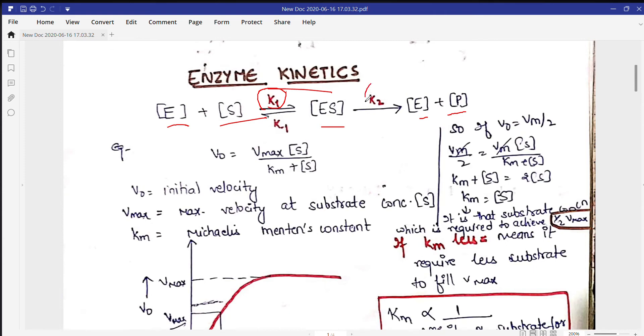Sometimes what happens is this ES complex is not stable and it breaks down into the enzyme and substrate again. This reverse reaction has been shown with the help of K minus 1. The backward reaction is shown by K minus 1, while the forward reactions are shown by K1 and K2 when product forms.